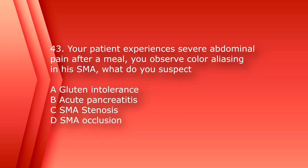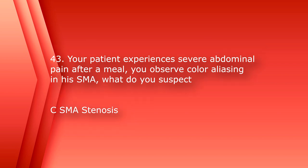Number 43: your patient experiences severe abdominal pain after a meal. You observed color aliasing in his superior mesenteric artery. What do you suspect? A. Gluten intolerance, B. Acute pancreatitis, C. Superior mesenteric artery stenosis, or D. Superior mesenteric artery occlusion. The answer is C, superior mesenteric artery stenosis.